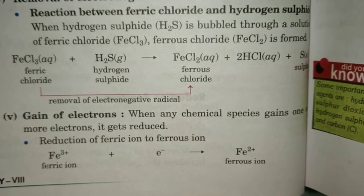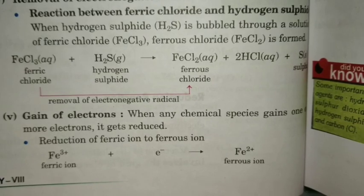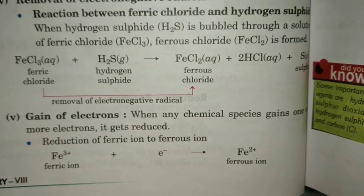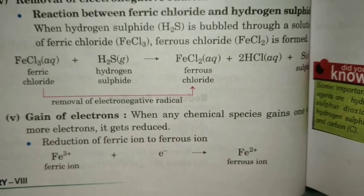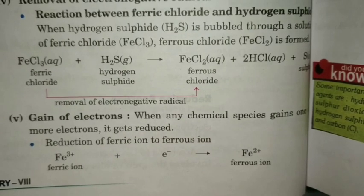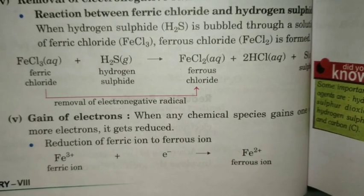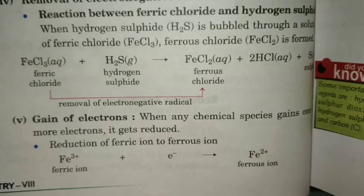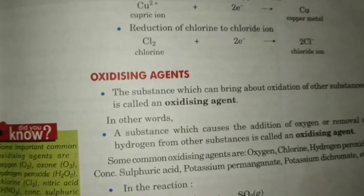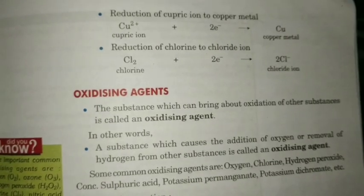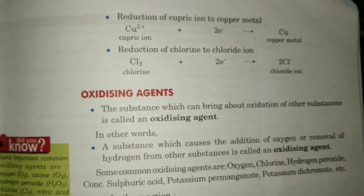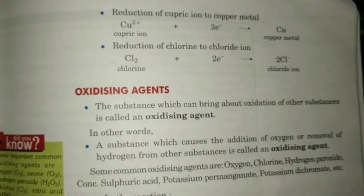Fifth point is gain of electrons. For example, Fe3+ gains an electron and converts to ferrous ion Fe2+, so Fe3+ is reduced to ferrous ion. Two more examples are there which you can see and easily understand.